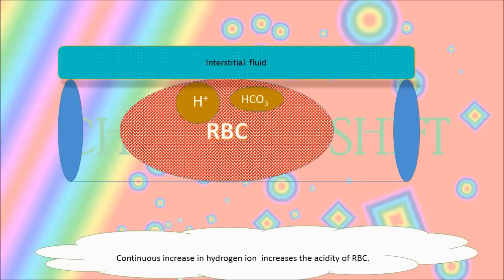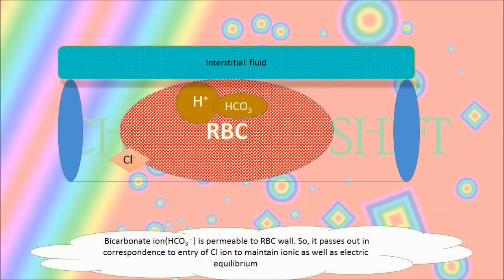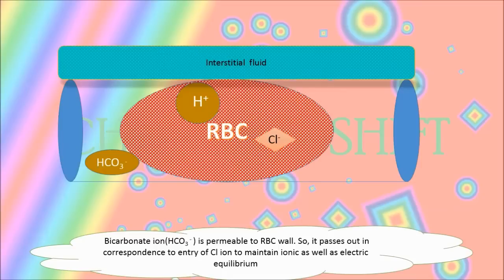So what happens next is that the chlorine ion, which is here in the interstitial fluid, exchanges with the bicarbonate in the RBC in response to the fall of partial pressure of carbon dioxide inside the RBC.